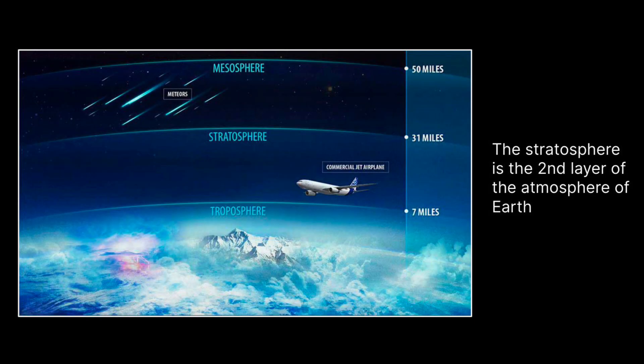This is an image of the stratosphere where aerosols are primarily located, in comparison to the mesosphere and the troposphere of the Earth. As you can see, commercial airplanes usually fly at a low level in the stratosphere, which gives you an idea of where aerosols are usually located.